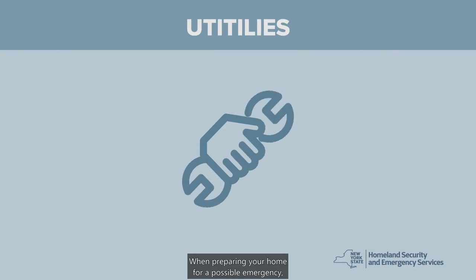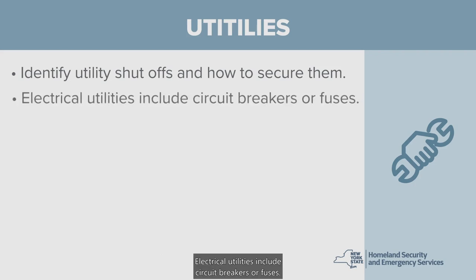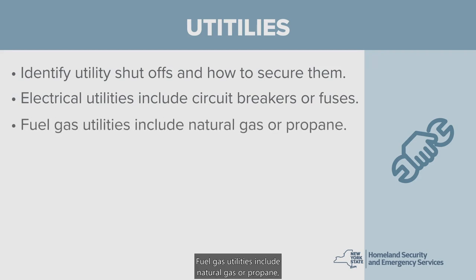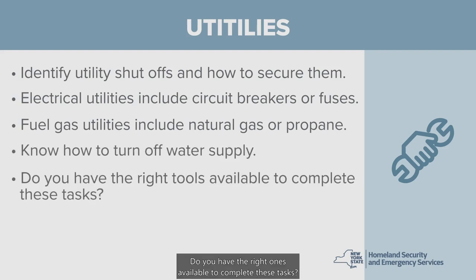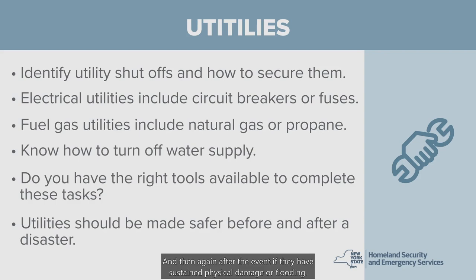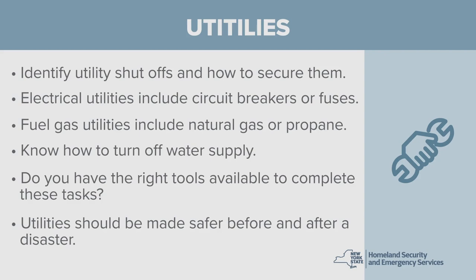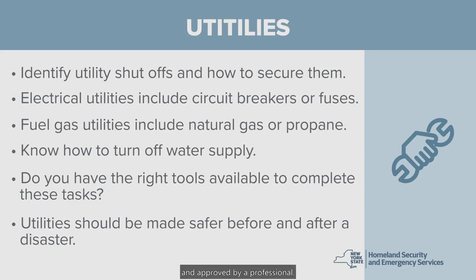When preparing your home for a possible emergency, you should know how to identify utility shutoffs and how to secure them. Electrical utilities include circuit breakers or fuses. Fuel gas utilities include natural gas or propane. And don't forget about your water supply — check your tools and make sure you have the right ones available. Furnaces, electrical panels, water heaters, fuel tanks, and other utilities must be made safe before an event, and again after the event if they have sustained physical damage or flooding. Once you turn off your utilities, never attempt to turn on any gas, electric, or water connections until the system has been inspected and approved by a professional.